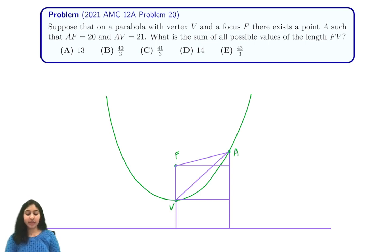So this problem says that we have a parabola with vertex V and focus F, and that there exists some point A, such that AF is equal to 20, and AV is equal to 21. And we're trying to find the sum of all possible values of the length FV.